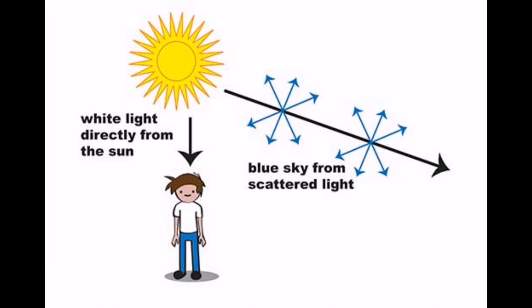Blue light is scattered in all directions by the tiny molecules of air in Earth's atmosphere. Blue is scattered more than other colors because it travels as shorter and smaller waves. This is why we see a blue sky most of the time.